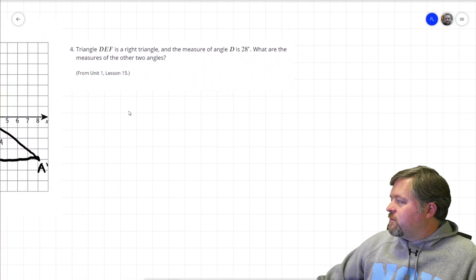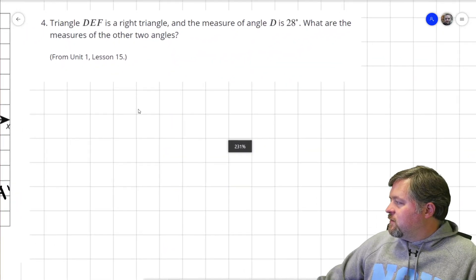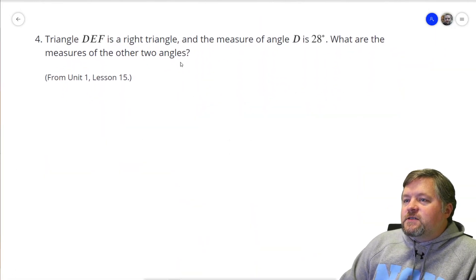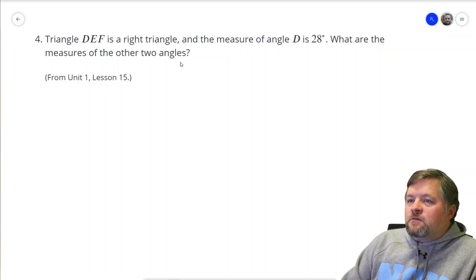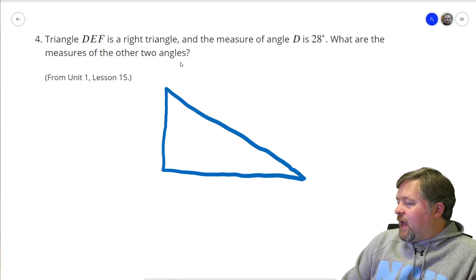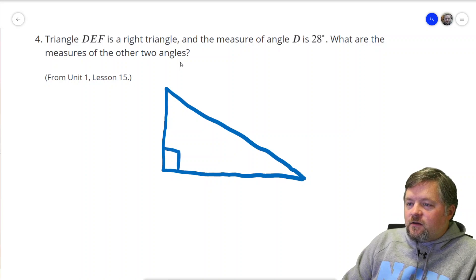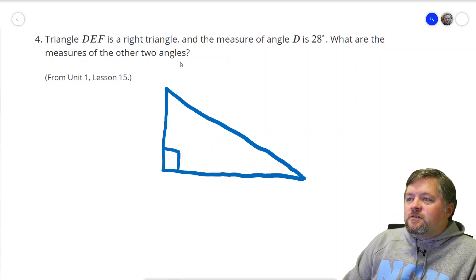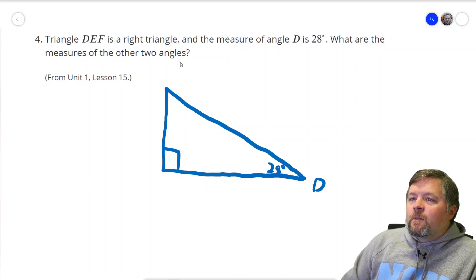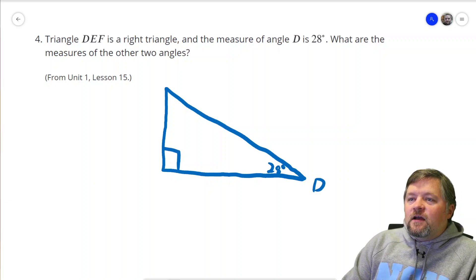Okay, one more problem here. Make that a little bigger so it's easier to read. Triangle DEF is a right triangle. So we have a right triangle. I'll just sketch out a right triangle real quick. Angle D is 28 degrees. The only one here that looks like it could be about 28 is this. I'll label it. Call that D. What are the measures of the other two angles?